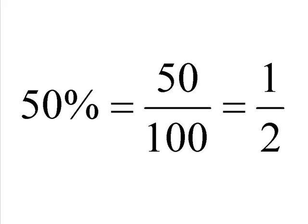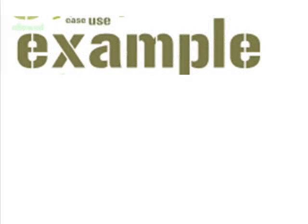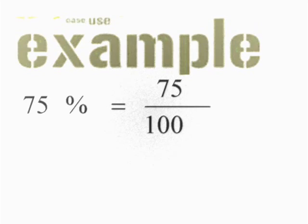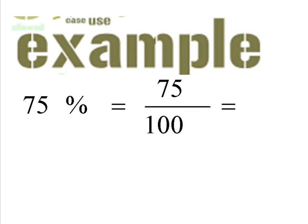So you might work out very quickly that percentages and fractions have a very intimate relationship with one another. Anyway, let's have a look at an example of this. First off, the first example we'll look at is 75%. Now 75% as a fraction equals 75 over 100. This can be further simplified by dividing both the top and the bottom number by 25. 75 divided by 25 is 3. 100 divided by 25 is 4. So 75% is the same as 3 quarters.